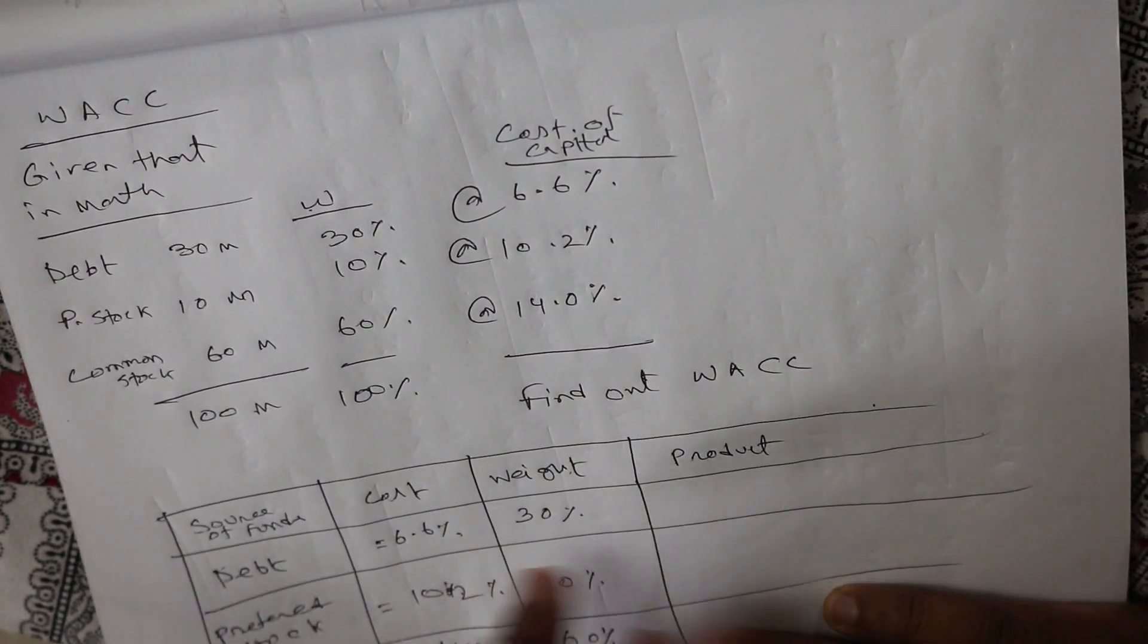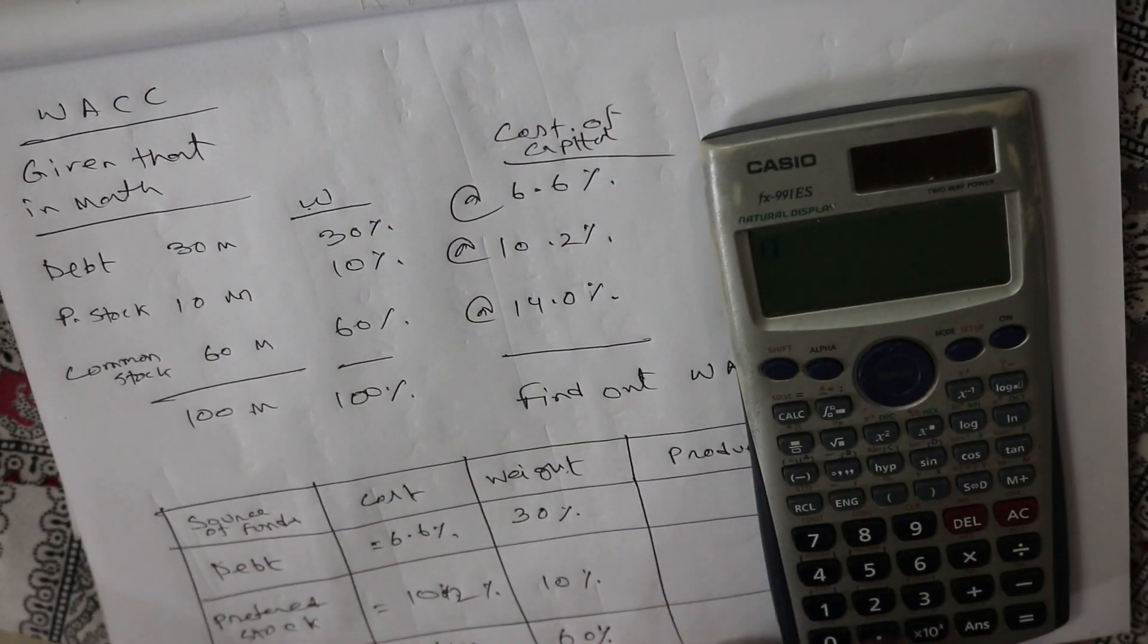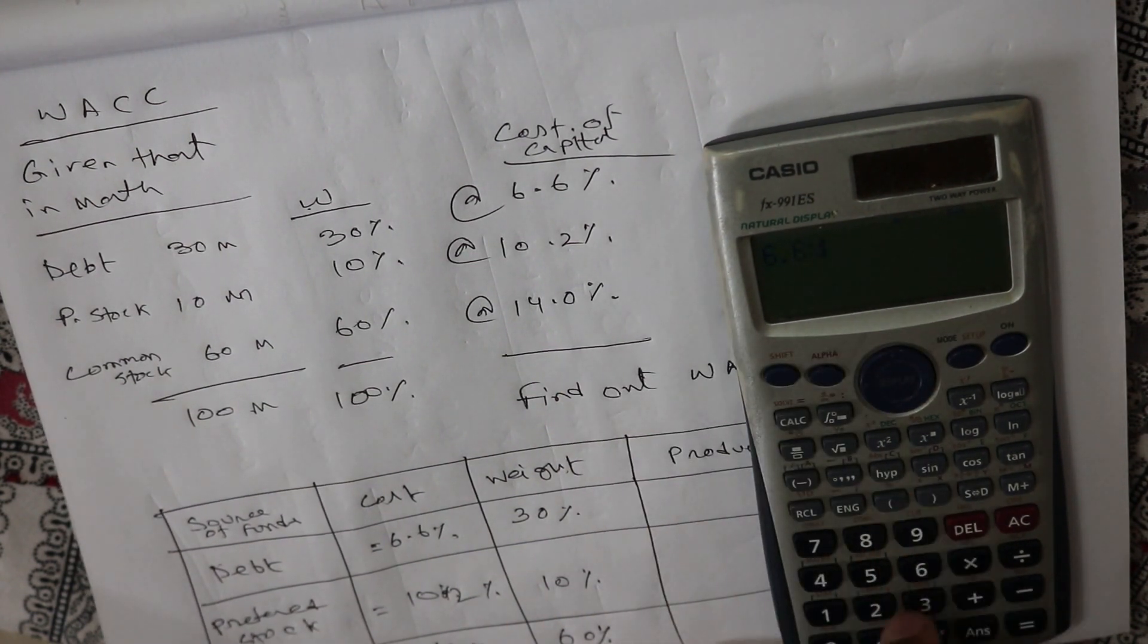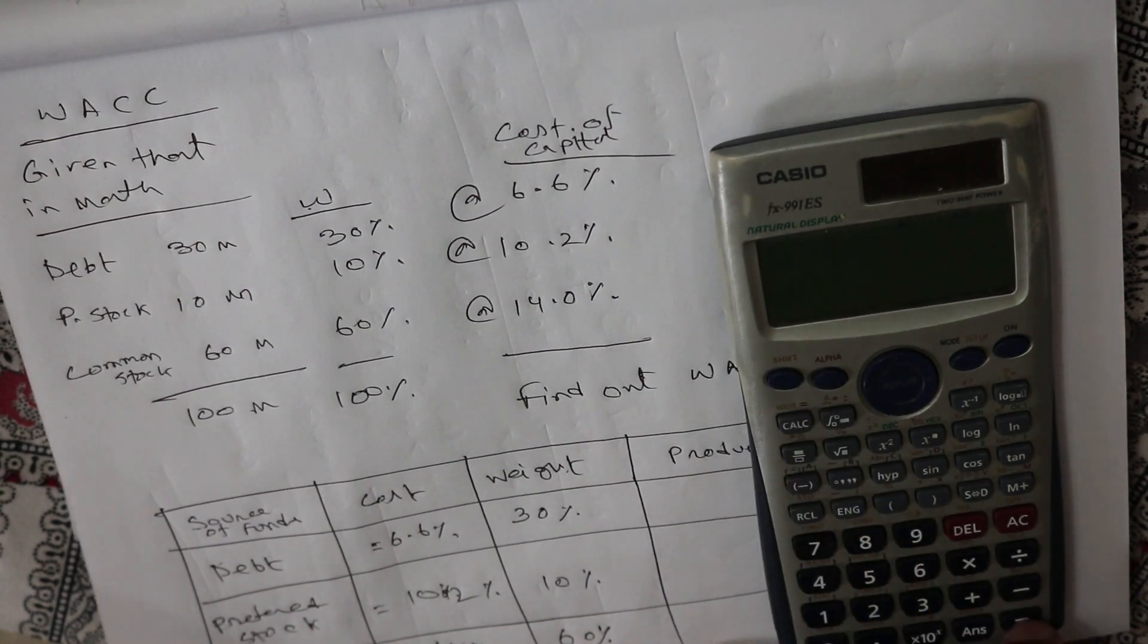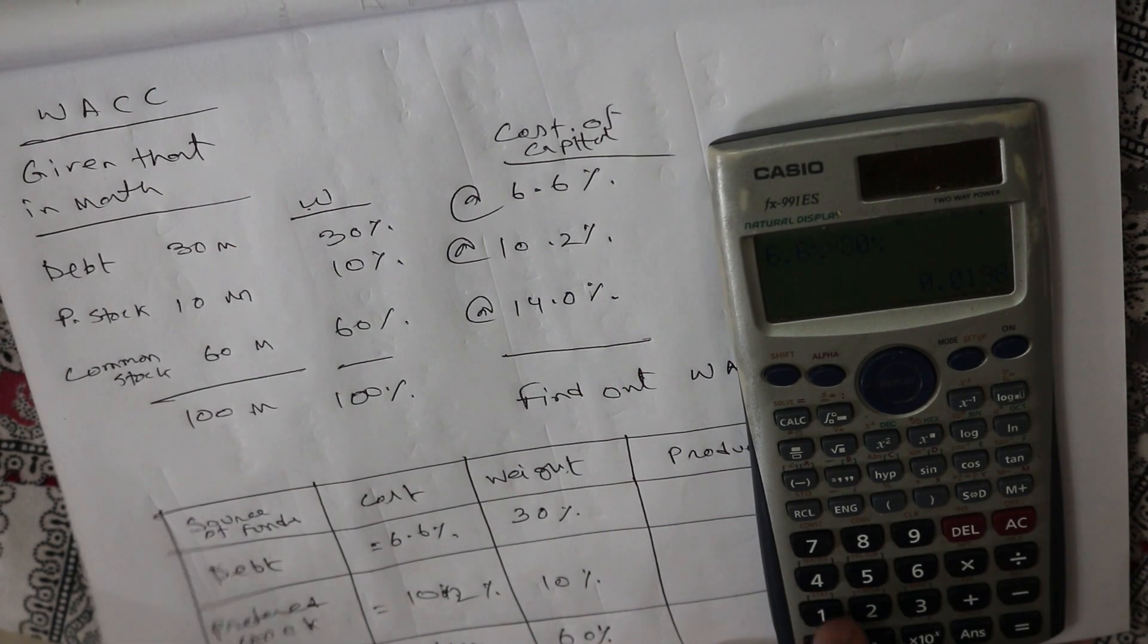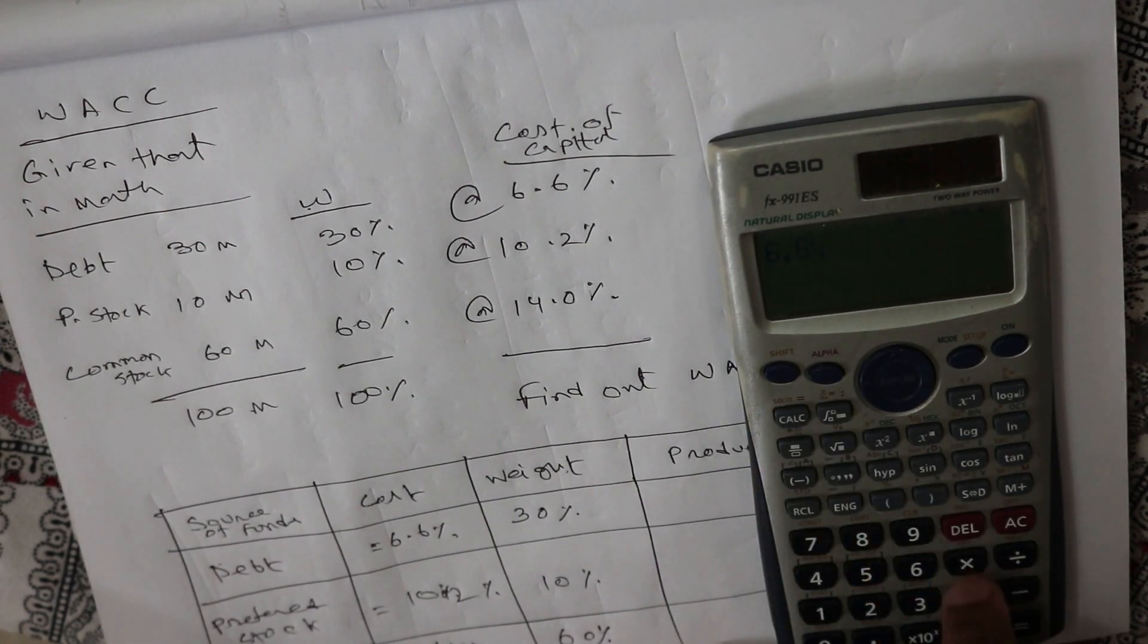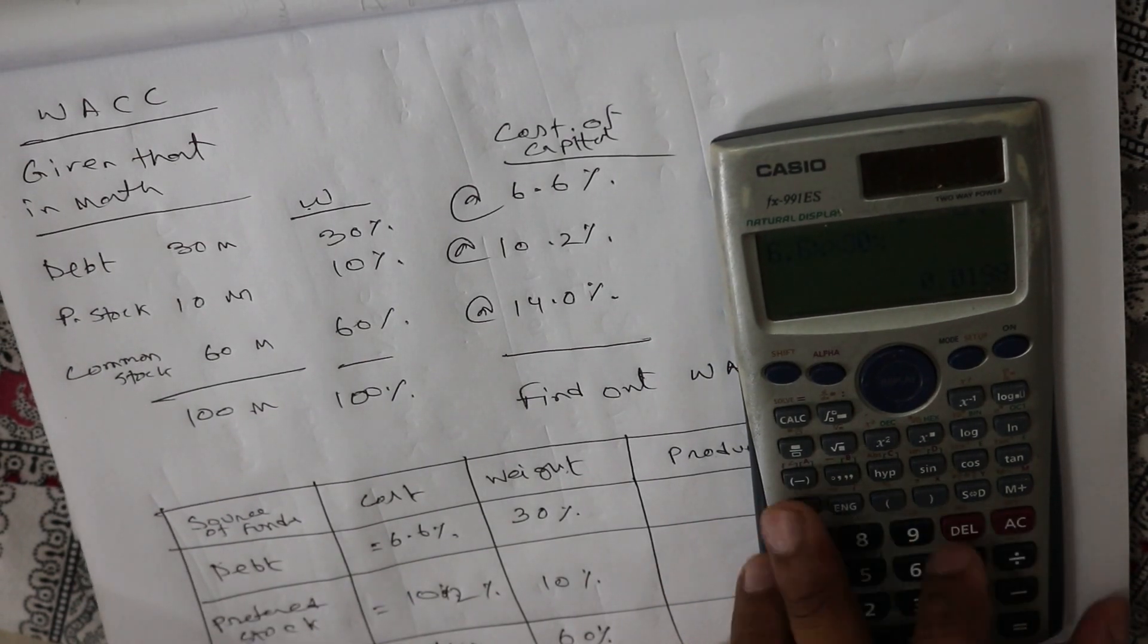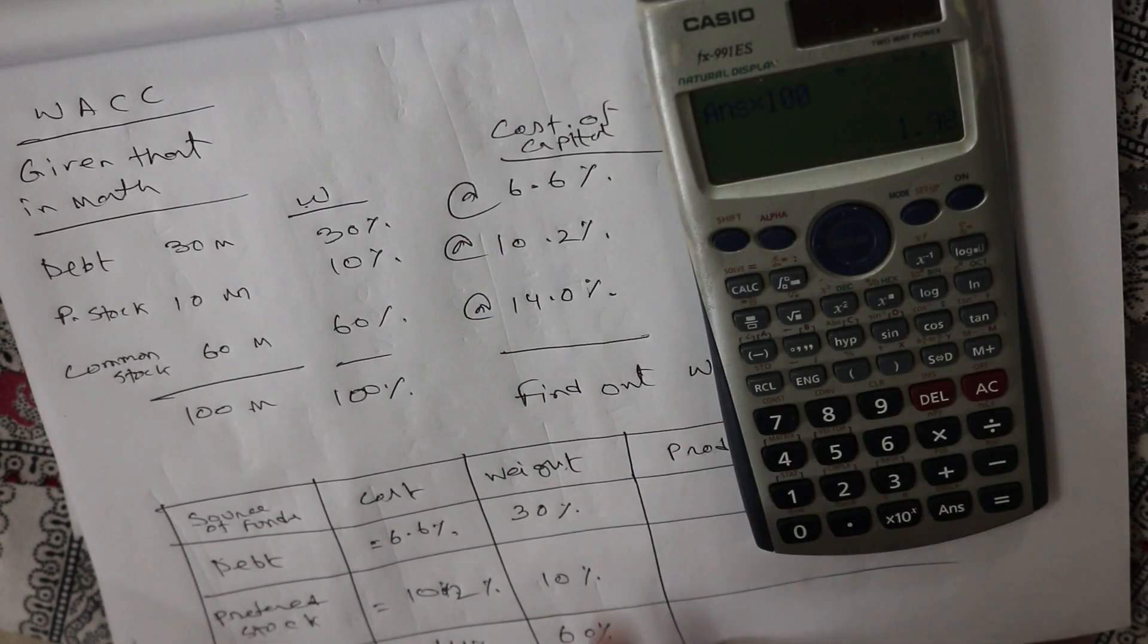Now if we calculate it, 6.6% into 30%, so 1.98%.